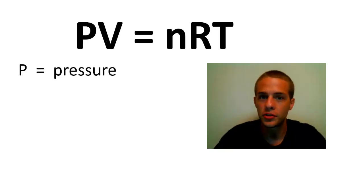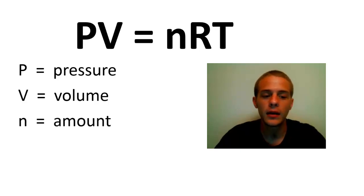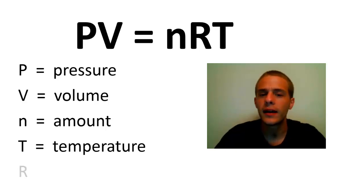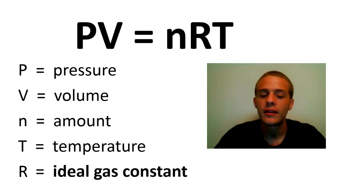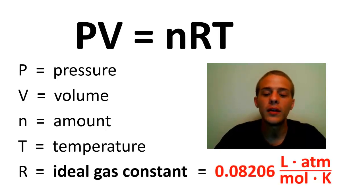So PV equals NRT. That's the ideal gas law equation. P, of course, that's the pressure of the gas. V, that is the volume of the gas. N, that's the amount of the gas. T, that's the temperature of the gas. And then R, that is that proportionality constant. And this is called the ideal gas constant. So it's a constant. It does not change. And the value of the ideal gas constant, R, is this: it is 0.08206 liters times atmospheres over moles times kelvins.